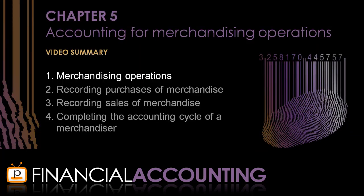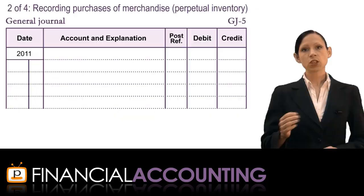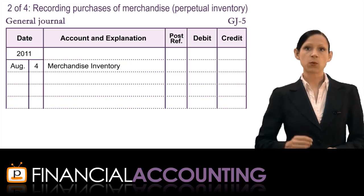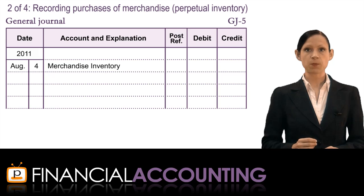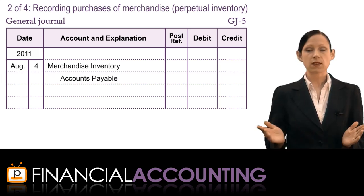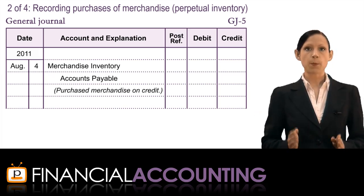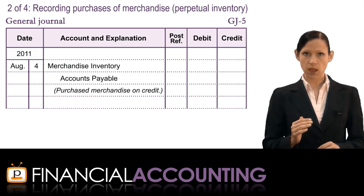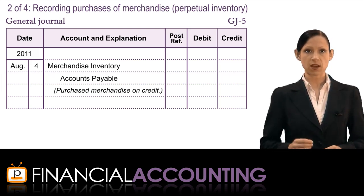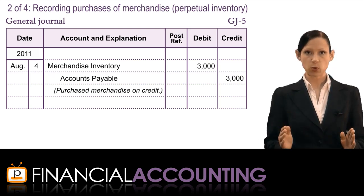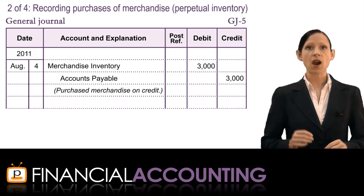Recording purchases of merchandise using the perpetual inventory system: the journal entry is straightforward. We debit the merchandise inventory account — an asset account increased by debits — and credit either cash or accounts payable, depending on whether it was a cash or credit purchase. If we negotiated a trade discount with the supplier and paid a lower price than advertised, the value recorded in the accounts is the actual price paid, not the higher advertised price.